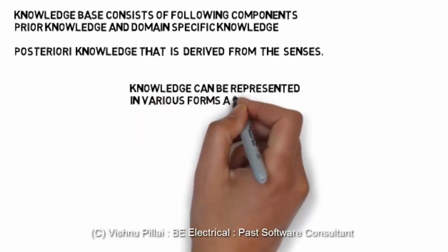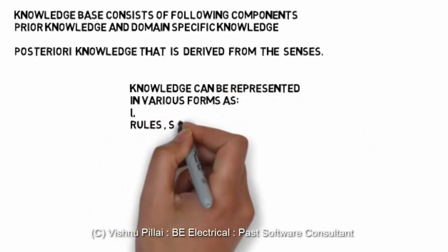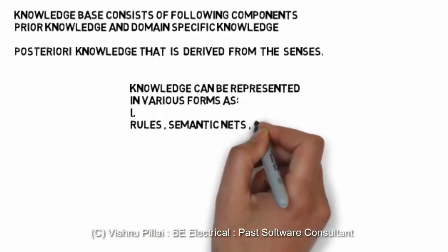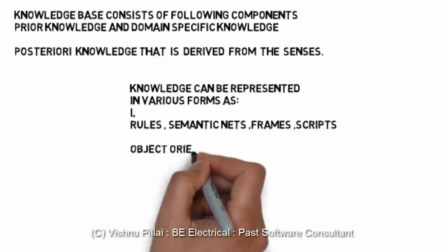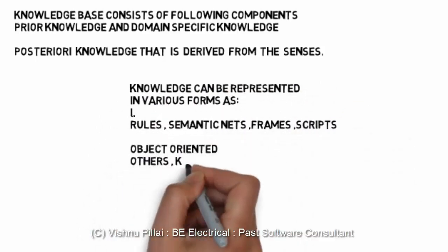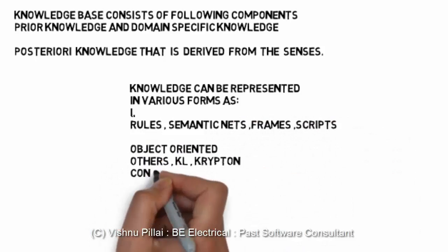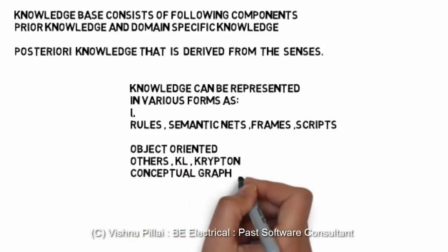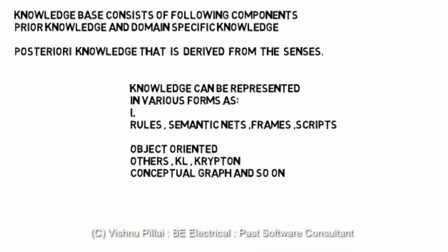Knowledge can be represented in various forms such as rules, semantic nets, frames, scripts, and object-oriented approaches. Other representation languages include object-oriented languages like KL, Krypton, and conceptual graphs, and so on. These are the different ways in which knowledge can be represented in the knowledge base.